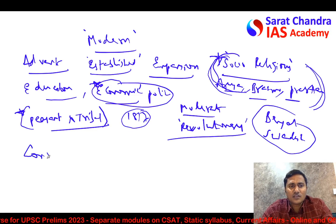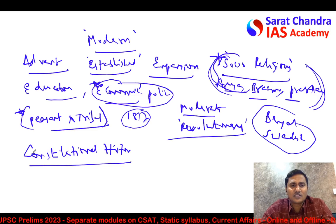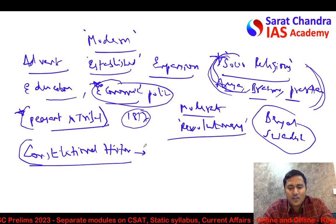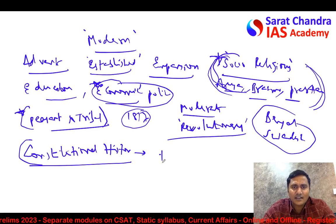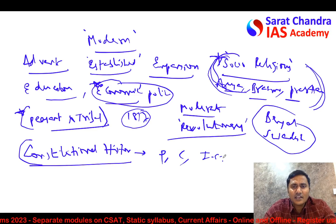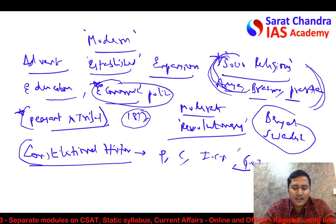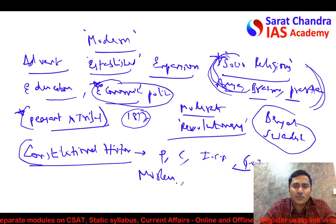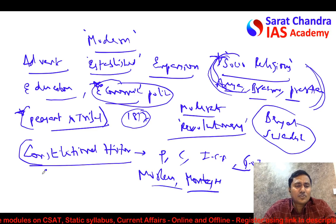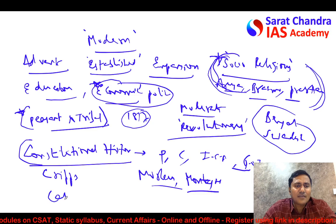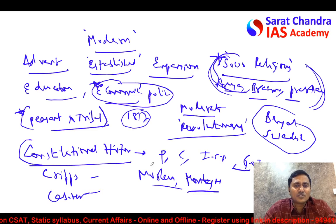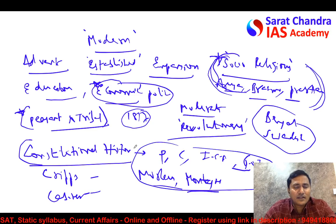The constitutional history is both part of history and polity, and is one of the most confusing areas for most candidates. You have to go through the Pitt's India Act, the Charter Acts, the Indian Councils Acts, and the Government of India Act — including those of 1919 and 1935. The Morley-Minto reforms, the Montagu-Chelmsford reforms, the Simon Commission, the Cripps Mission, and the Cabinet Mission are all important — knowing their specific provisions is key. All these acts from 1781, 1784, 1861, 1909 onwards must be studied.